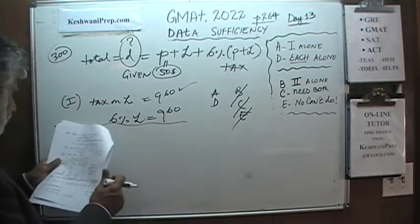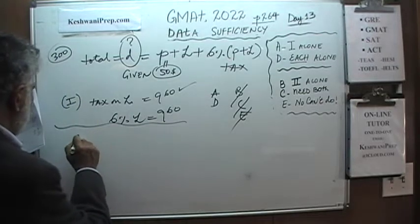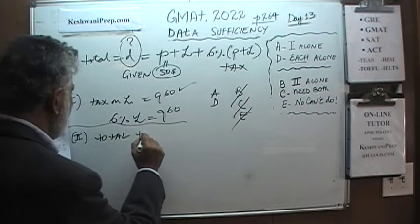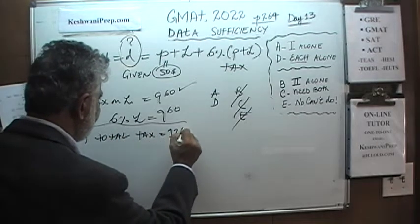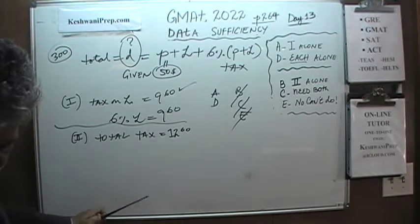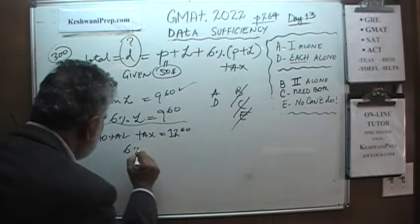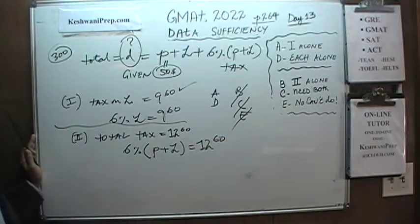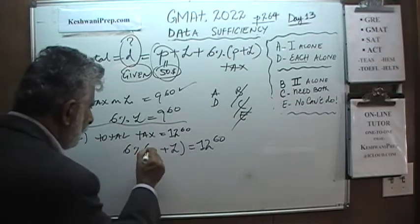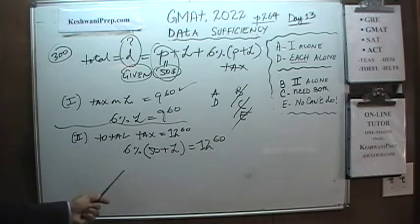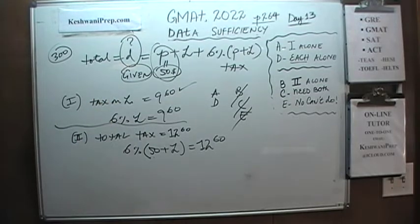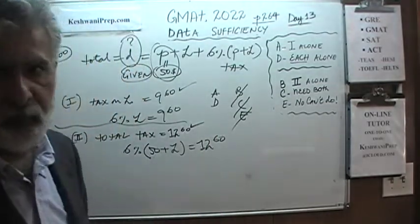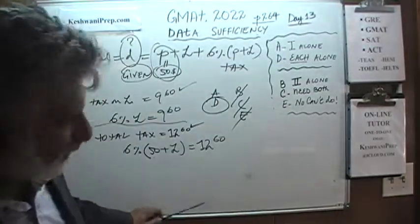The second statement tells us that the total tax we paid was $12.60. This means 6% of (parts plus labor) equals $12.60. We know parts are $50, so we can put that in, leaving one unknown L, which we can solve. Once we have L, we put it back and figure out the total amount paid. The second statement by itself is also enough. The answer is D — each statement alone is sufficient.